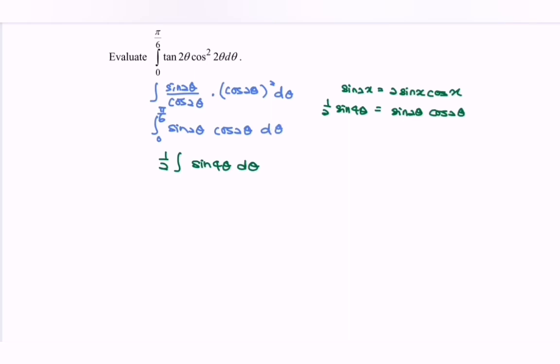So continue, if we integrate sin 4 theta, then we will have negative cos 4 theta over 4. Do remember, multiply with 1 over 2, and then we have pi over 6 and then 0.